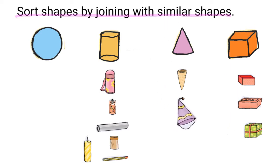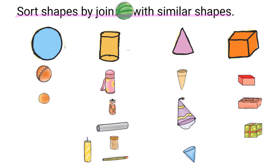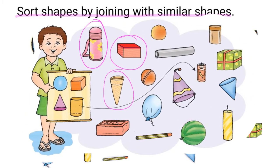We also have many different cone shaped objects. And we have a ball, an orange, a watermelon, and a balloon as circle shaped objects. You can draw lines to sort out the shapes in your textbook.